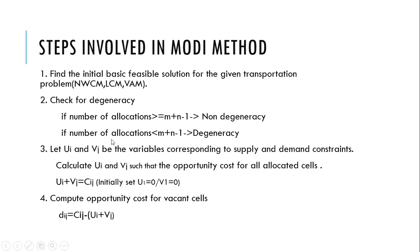If the number of allocations is less than m plus n minus one then there is a degeneracy. If there is a degeneracy we have to resolve the degeneracy before proceeding further.